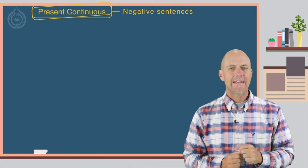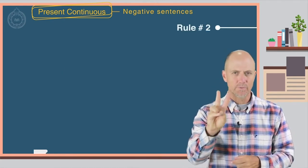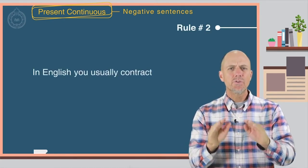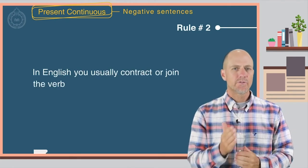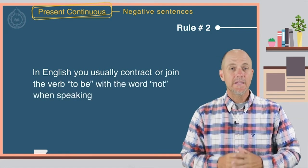Good. Now let's take a look at rule number two. In English, you usually contract or join the verb to be with the word not when speaking.